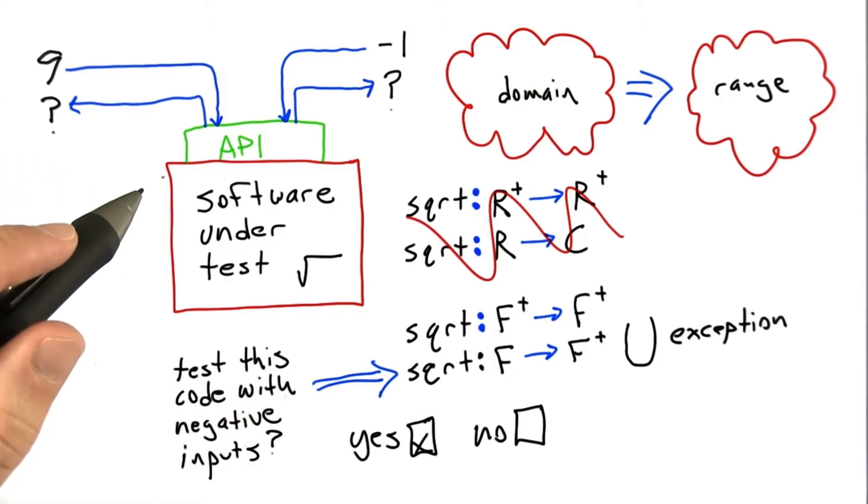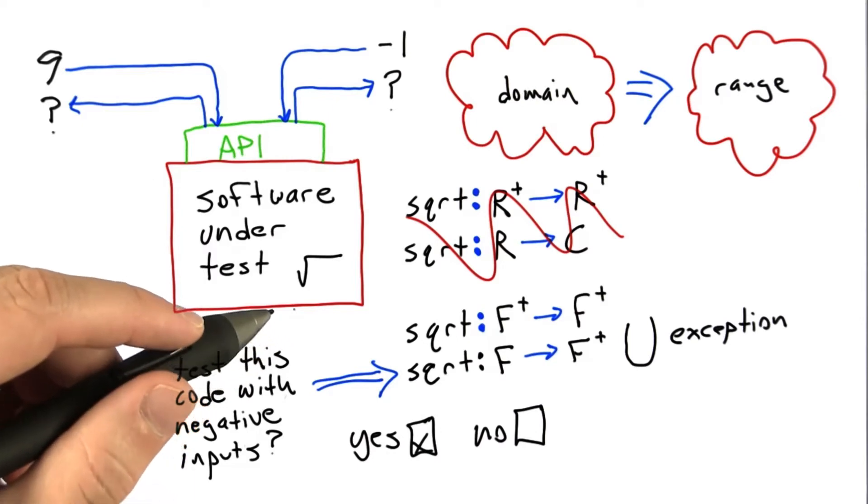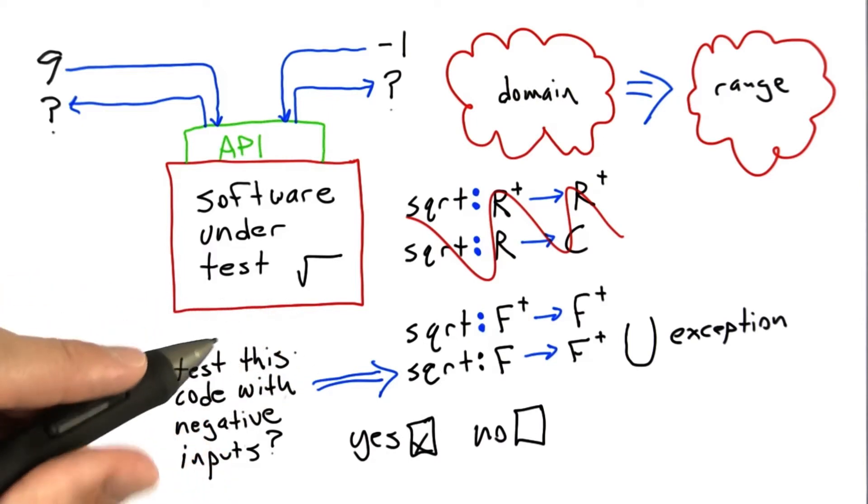Now sometimes, as a software tester, you'll test code with an input that looks like it should be part of the domain, and the code will malfunction.